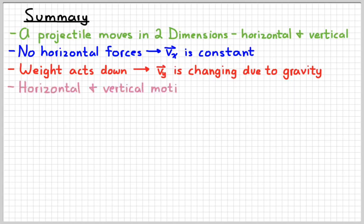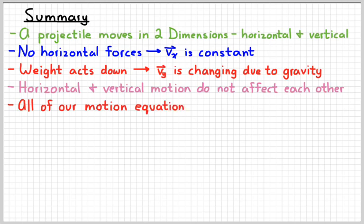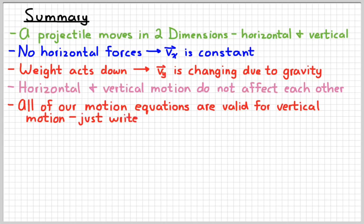The horizontal and vertical motions of a projectile do not affect each other. And so it doesn't matter how fast it's moving forward. It's still going to fall at the same rate. And then all of our motion equations are still valid for the vertical motion. Just anywhere in the equation we see an X, we'll write a Y instead. Everything else that we've learned in our kinematics unit remains the same.